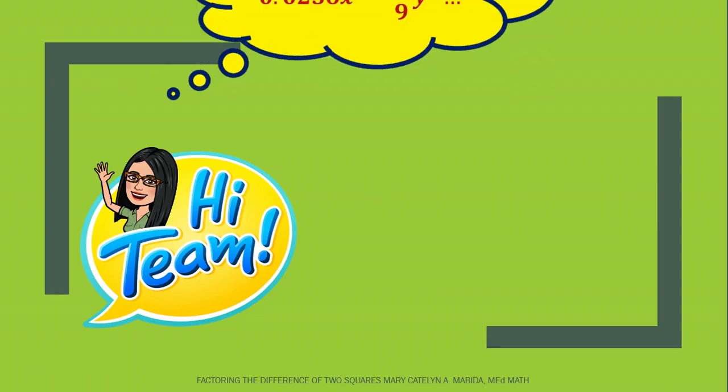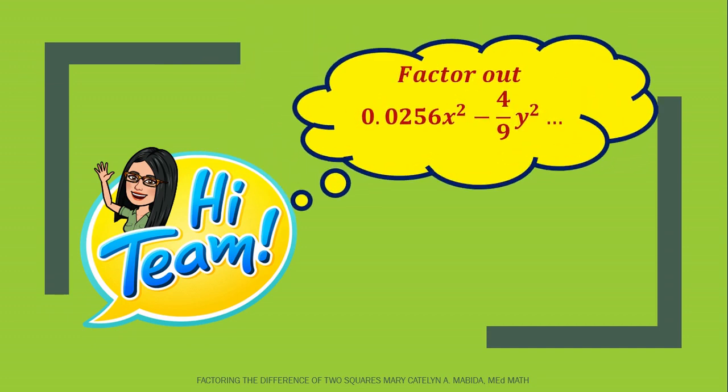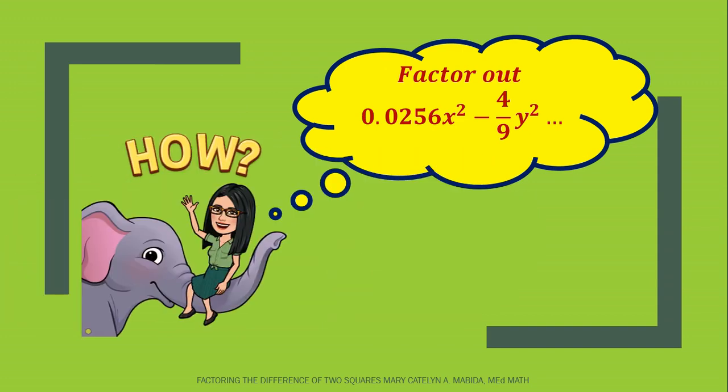Hi team! What's up? Today, let's factor out 256 ten-thousandths x-squared minus four-ninths y-squared. But how?